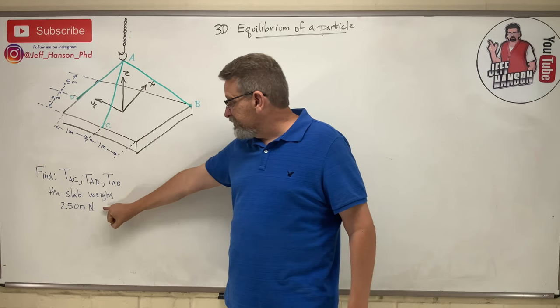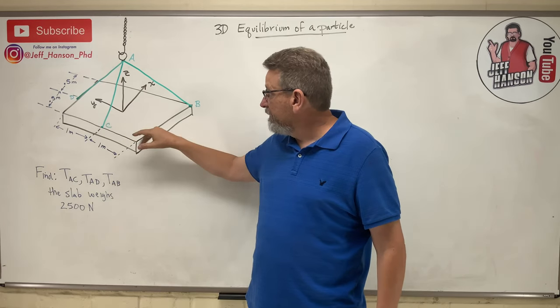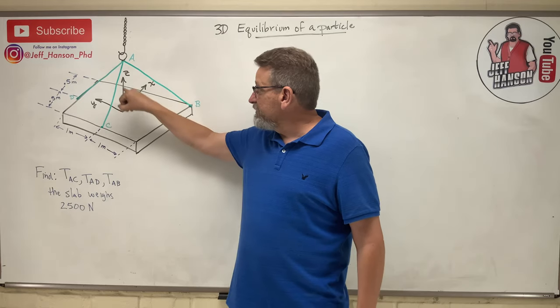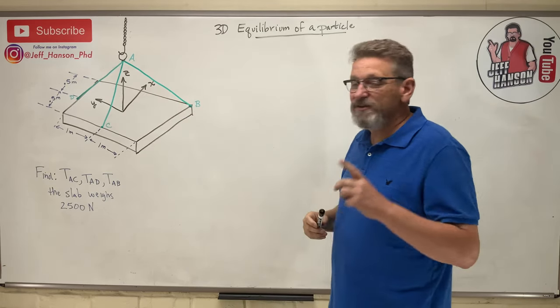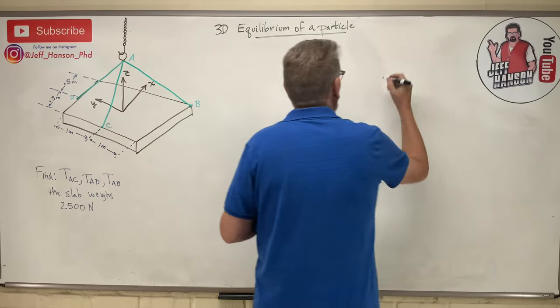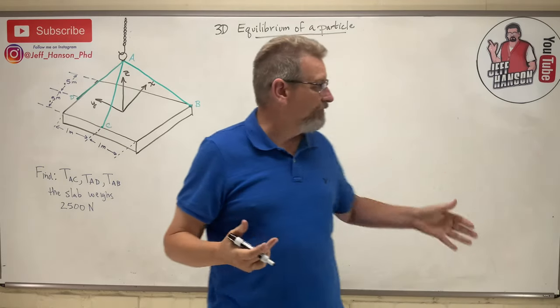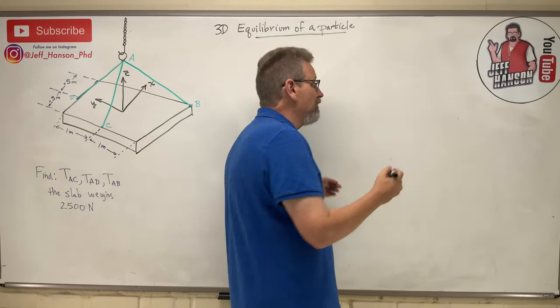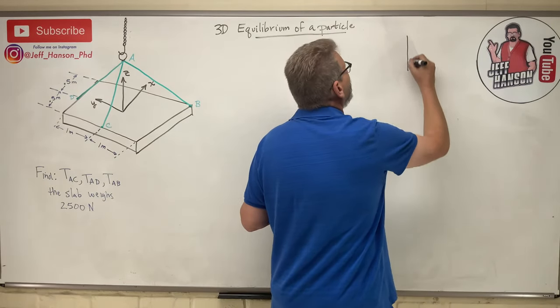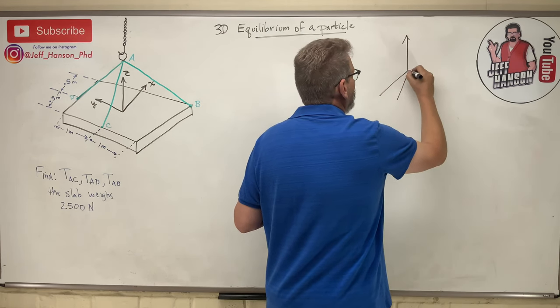We know that the slab weighs 2,500 newtons. Everything's metric here. We need to find the tension in these three cables. Step one, we need to draw a free body diagram. 3D free body diagrams are hard to draw. I only have a 2D chalkboard here.